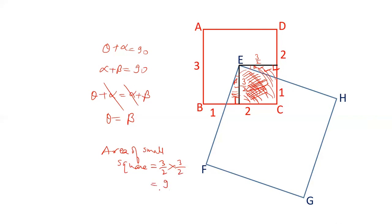We just calculate the area of this small square, which is 3/2 × 3/2 = 9/4. Therefore the area of the shaded region is 9/4. If you like this, please like our videos and subscribe to our channel.